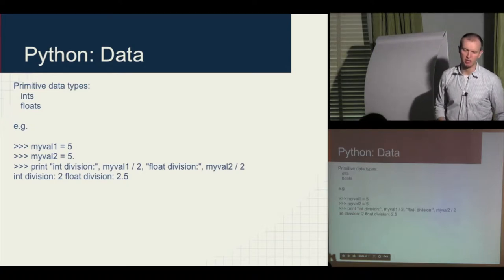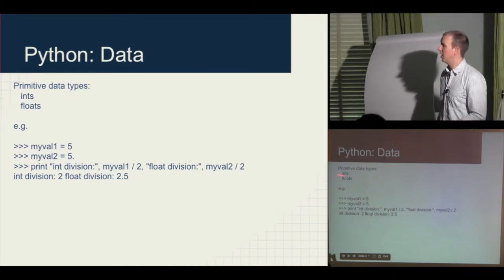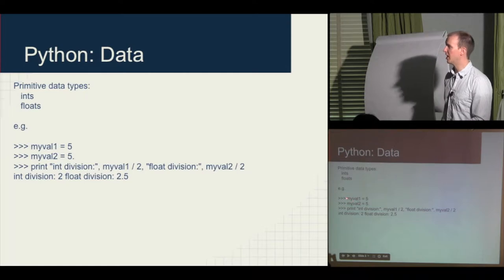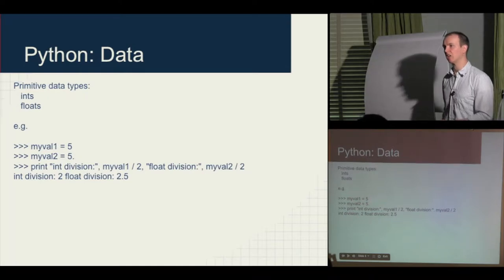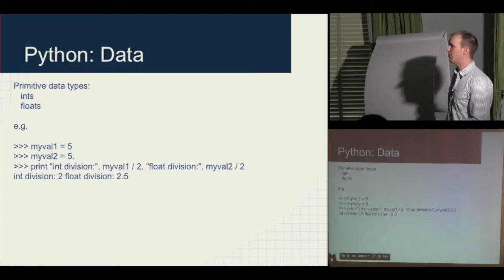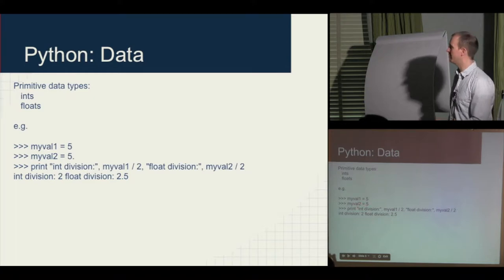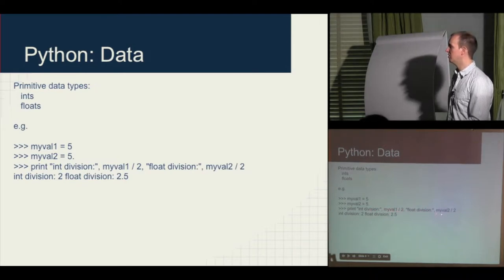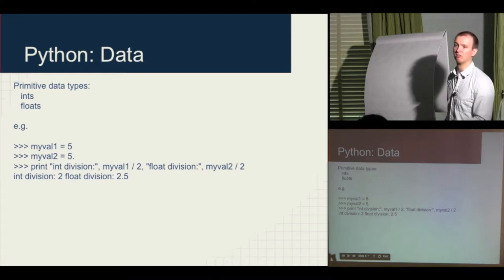The primitive data types in Python are integers and floats. You can declare a new integer by saying myval1 = 5 — this is a declaration and initialization in one. The type of myval is given by the right-hand side. You can say myval2 = 5.0, which is a floating point number. You can compare the difference between integer versus floating point division: myval1 divided by 2 gives you 2, while myval2 divided by 2 gives you 2.5.